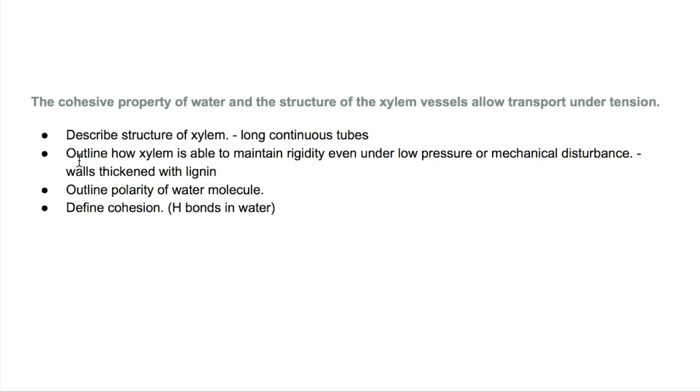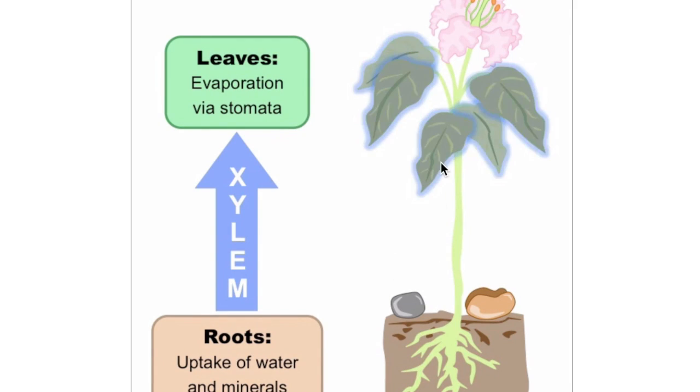Now we need to know how the xylem is able to maintain its strength even under low pressure. First, how is low pressure caused? When the water evaporates from the leaves, inside the xylem there's less pressure because there's less water.